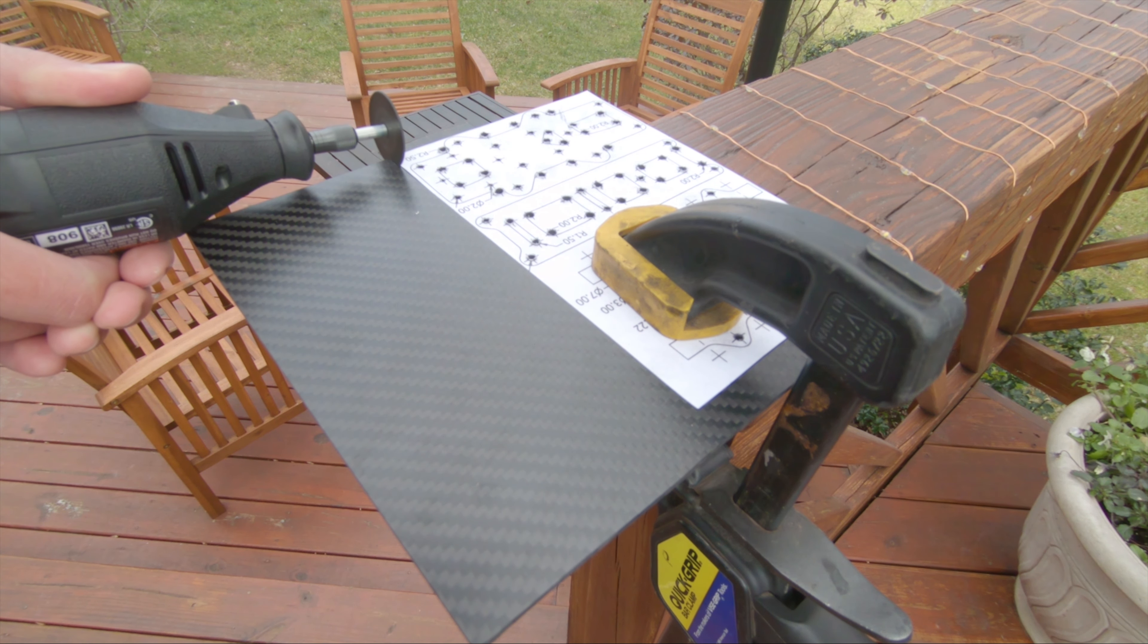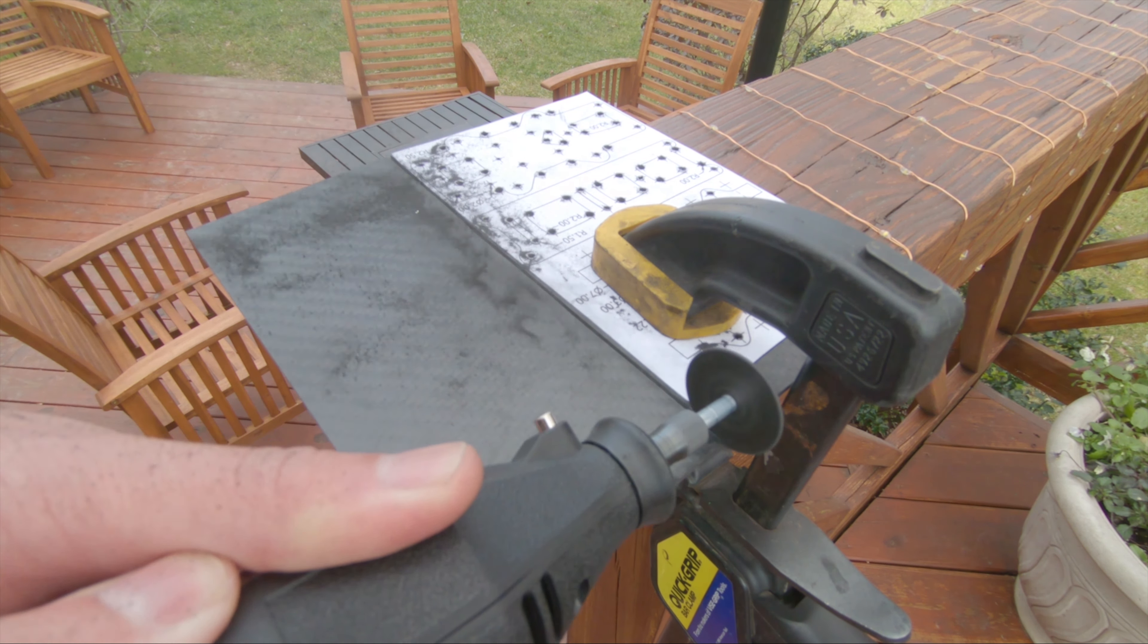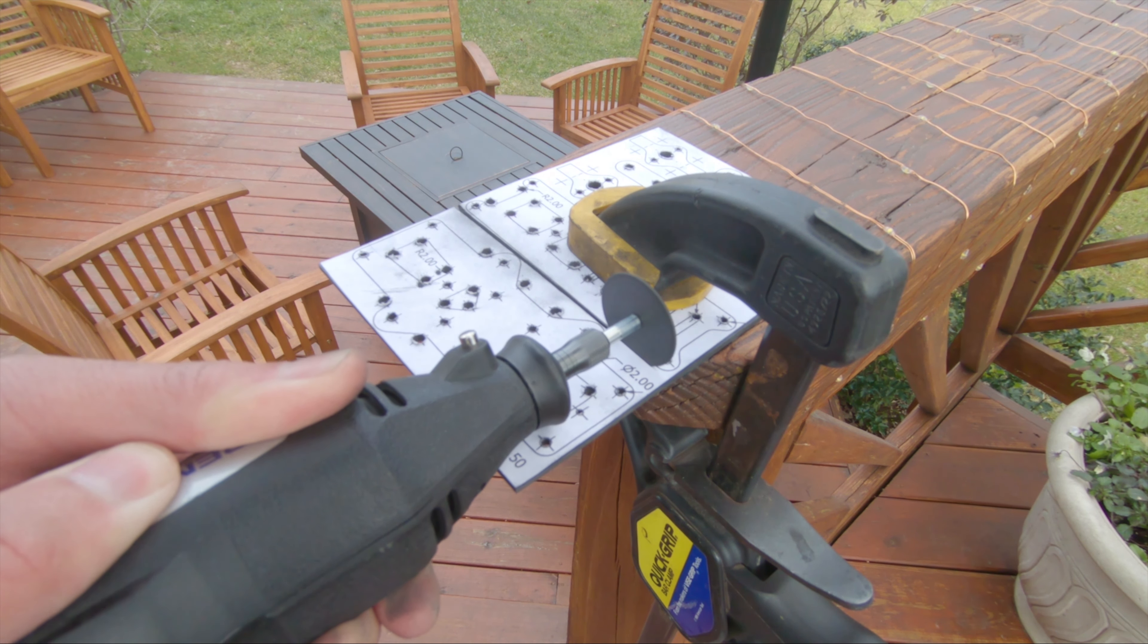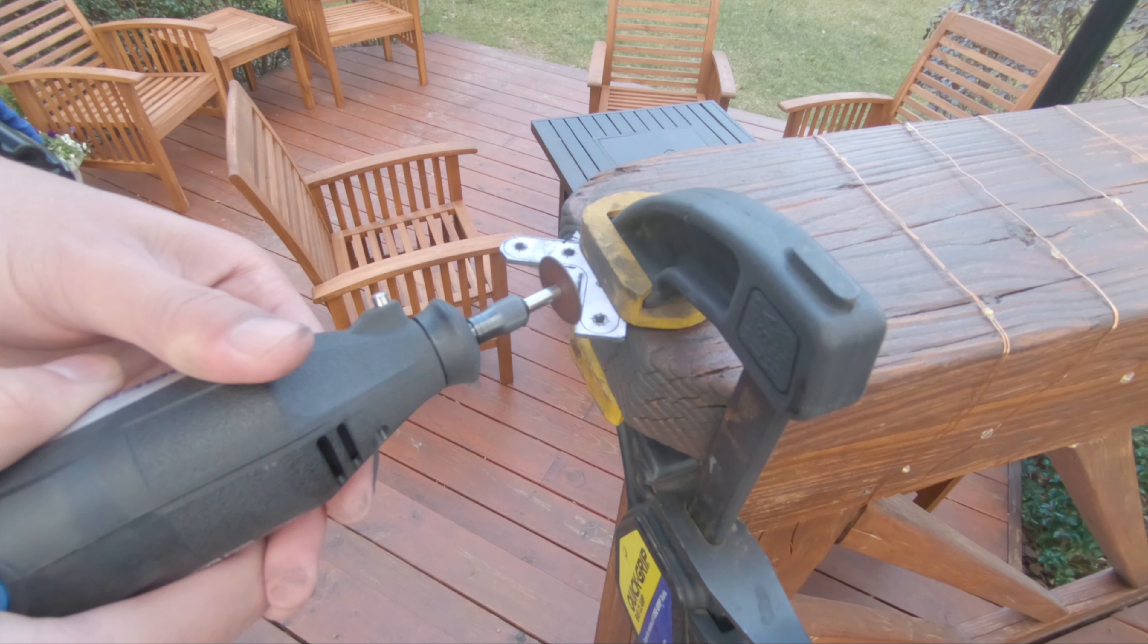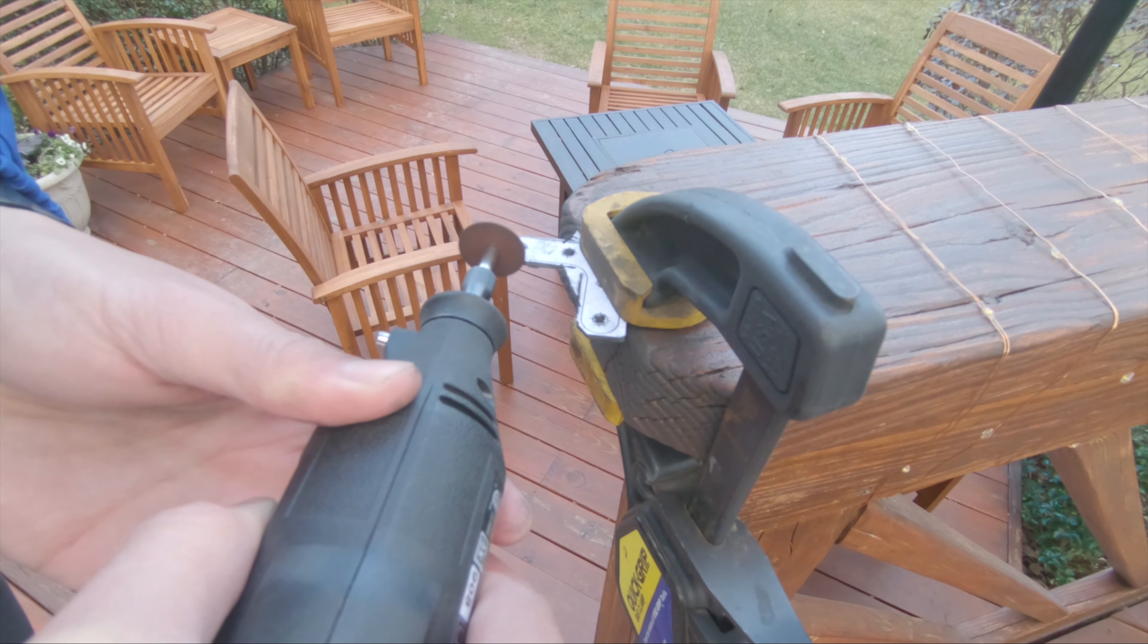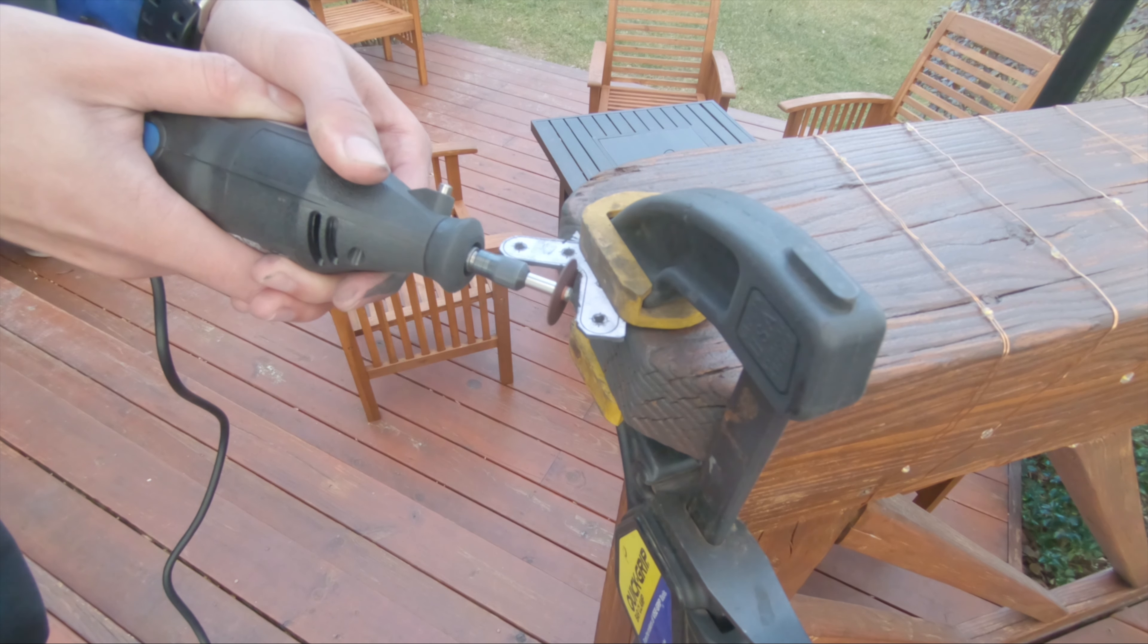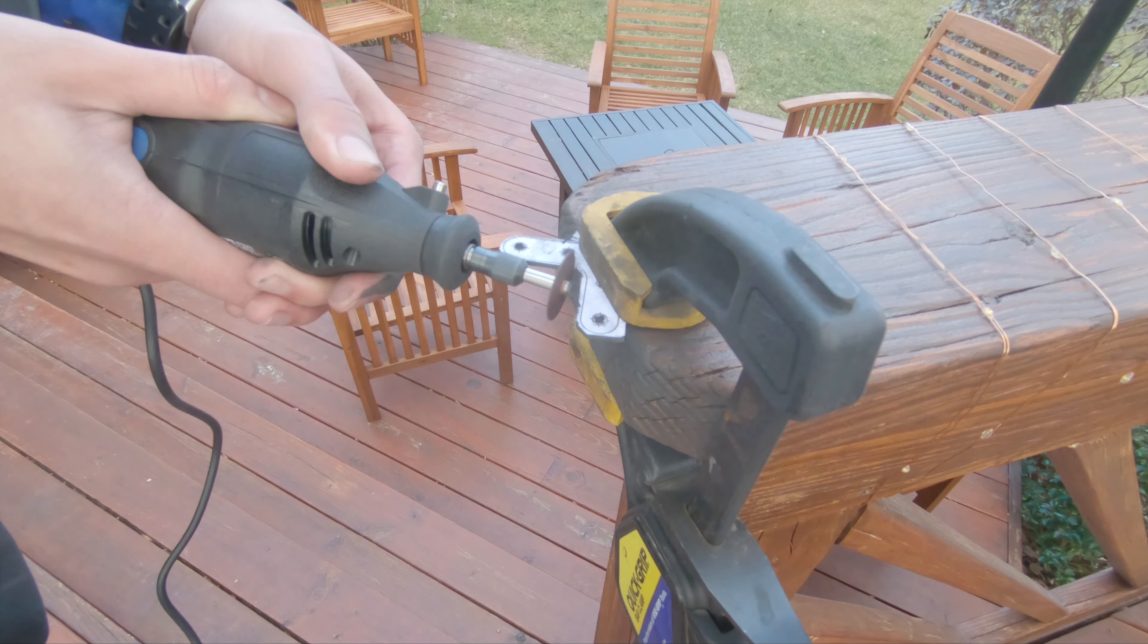I'm using a Dremel outside to rough cut all of the carbon plate parts. I'm really just trying to get off as much material as I can without cutting too far, that makes my life easier for the next steps.